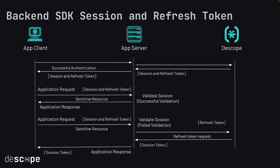Now let's look at backend session and refresh token management. This is the sequence diagram when you choose to integrate using the backend SDKs only, meaning your application server communicates with the Descope service for all authentication requests and session validation. The first step is for the application client to send an authentication request to your application server, which will then contact Descope — sending an OTP, a magic link, or any of the other methods.